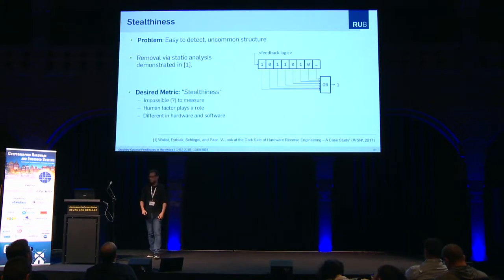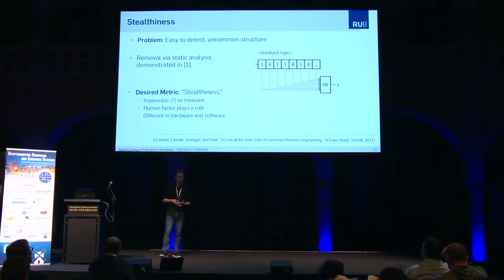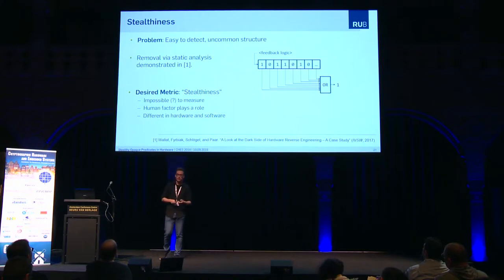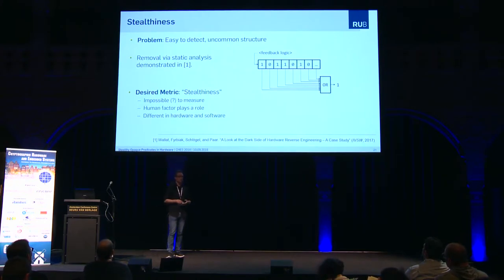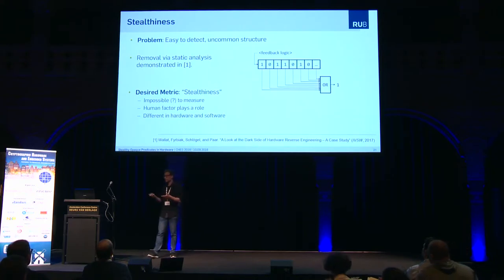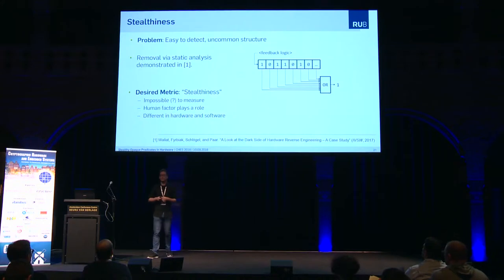The problem is that we need a metric to quantify how good our obfuscation scheme is. This metric is stealthiness — we need to be stealthy. The problem is: how do we measure stealthiness? In contrast to software reverse engineering where we have many automated tools, hardware reverse engineering is mainly done manually. The human factor plays a role here, and quantifying it may be even impossible, but we can at least argue for good stealthiness, which is also what we do in the paper.